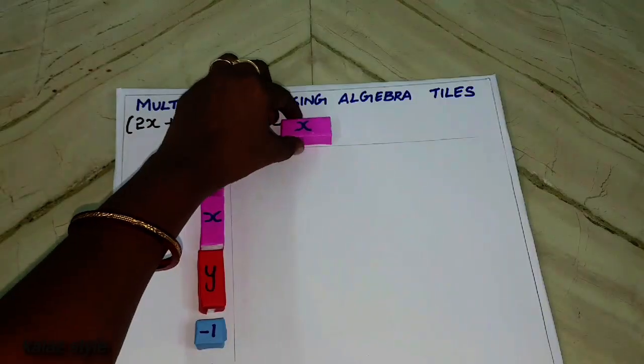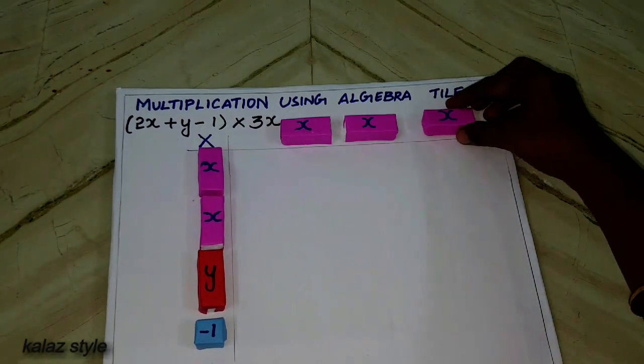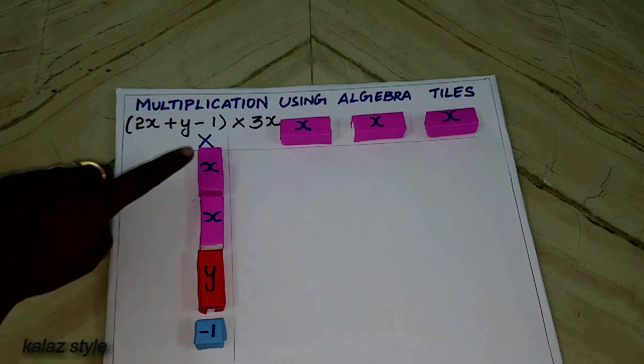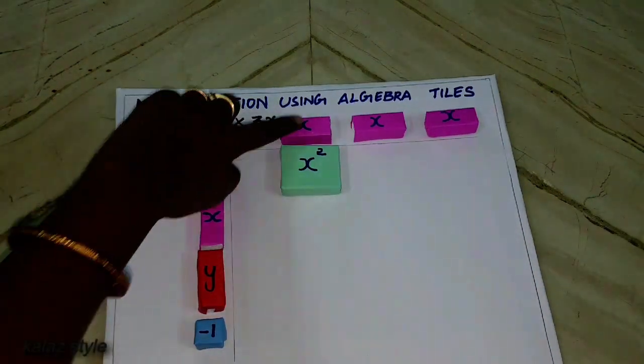For the 3x, I'm gonna mention 3 times of x over here. Now let me start multiplying for the first row.